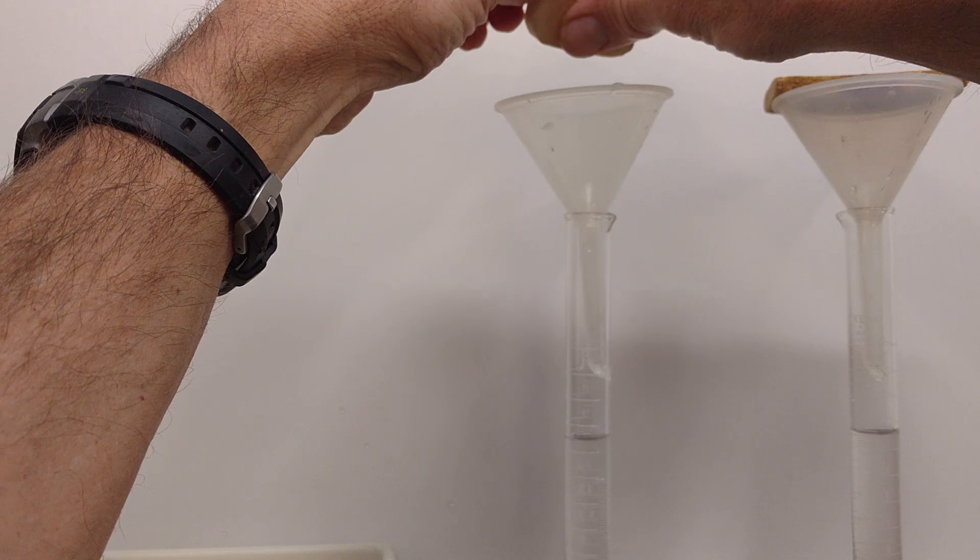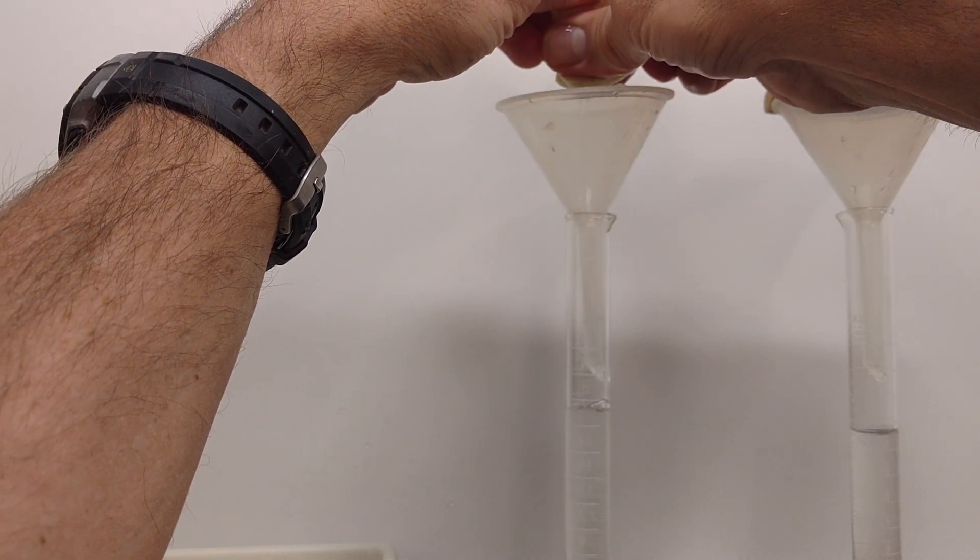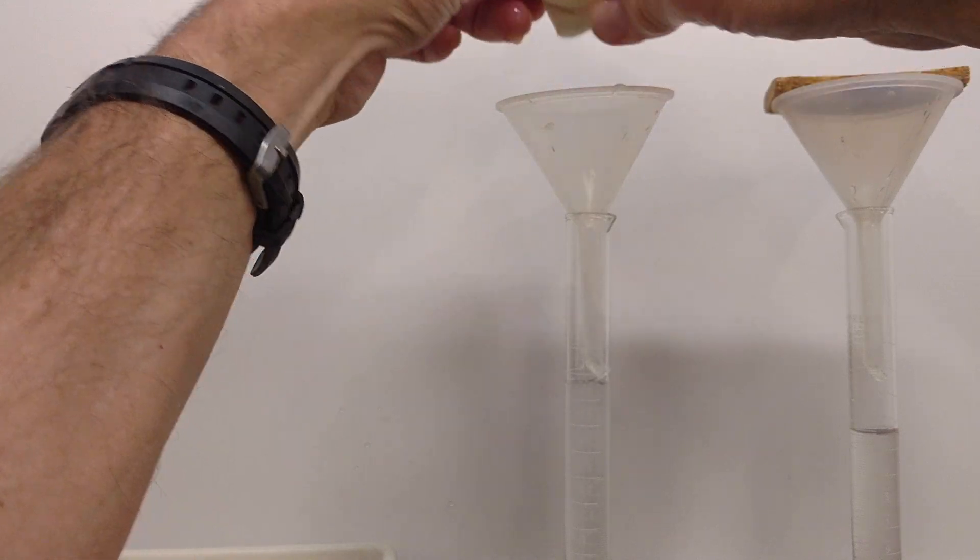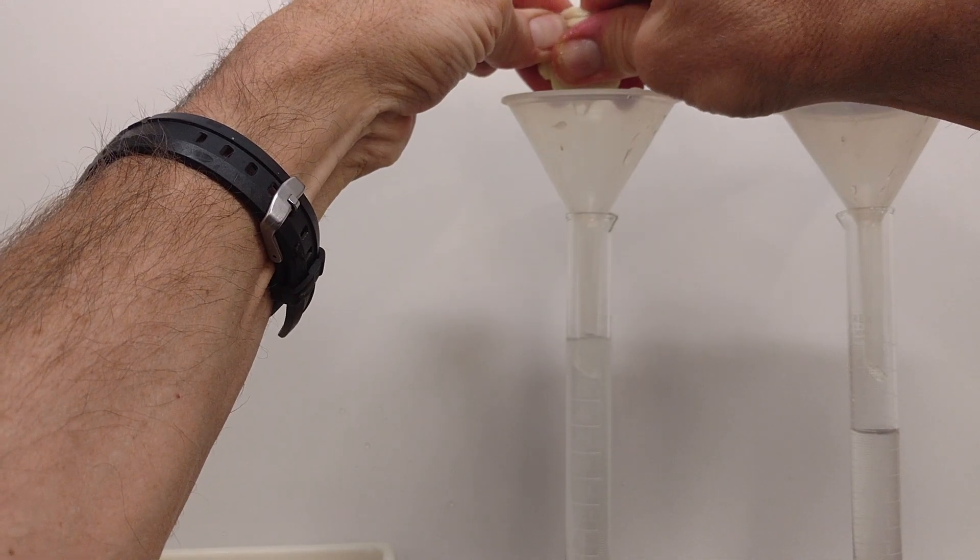Not all plants have the same ability to extract water, and so where one plant might stop at this much water, a desert plant might be able to pull a little bit more water out of it yet.